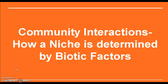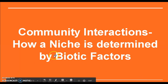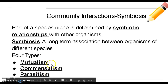For the rest of this video, we're going to focus on community interactions between organisms — another way to think about how a niche is determined by biotic factors. Part of a species' niche is determined by symbiotic relationships with other organisms. Symbiosis is a long-term association or relationship between organisms of different species. There are four types of symbiotic relationships: mutualism, commensalism, parasitism, and competition.